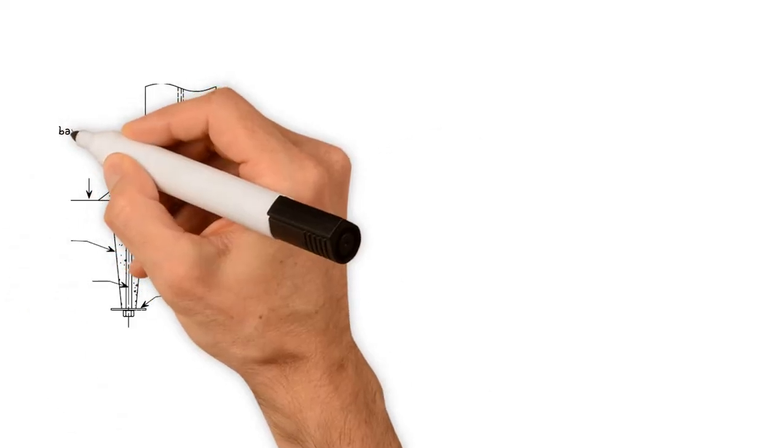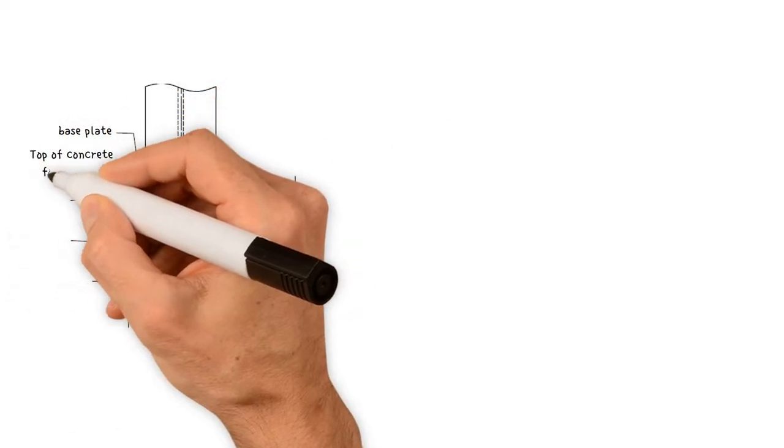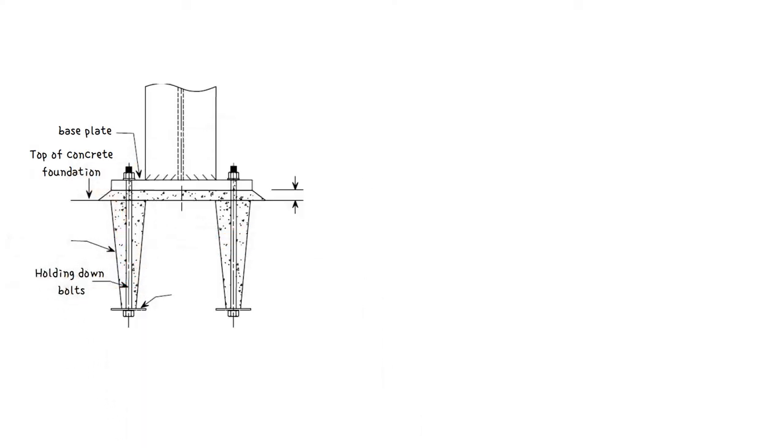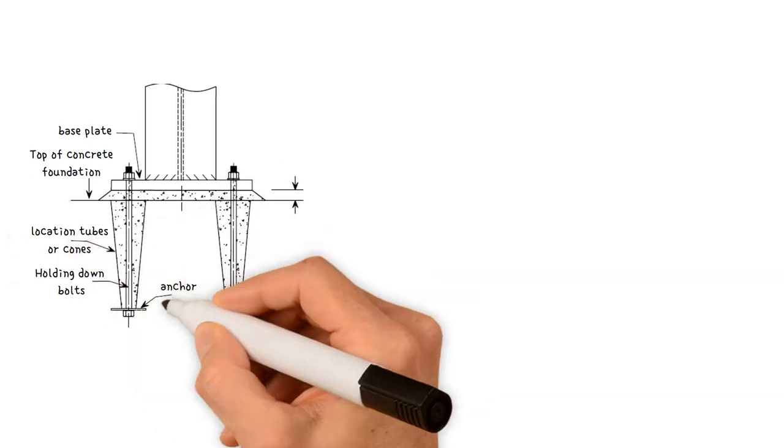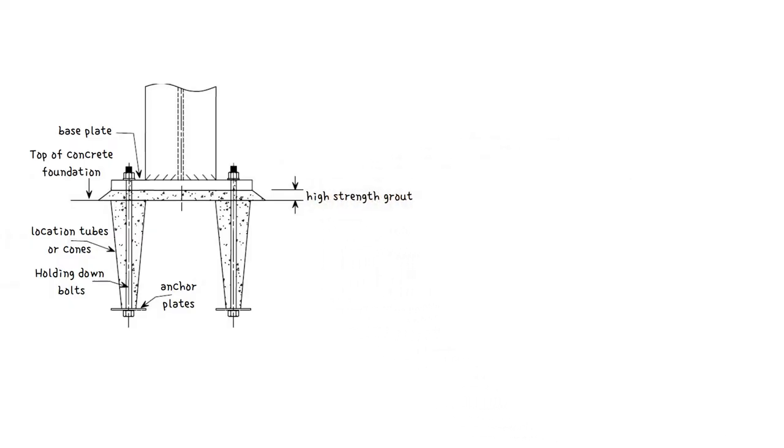Column bases are typically made up of a single plate fillet welded to the end of the column and attached to the foundation with four holding down bolts. To prevent pullout, the bolts are cast into the concrete base in location tubes or cones and are fitted with anchor plates. The area below the plate is filled with high strength grout.